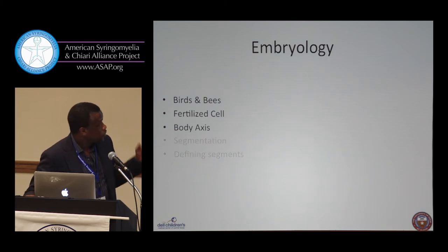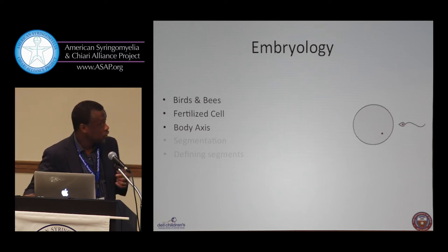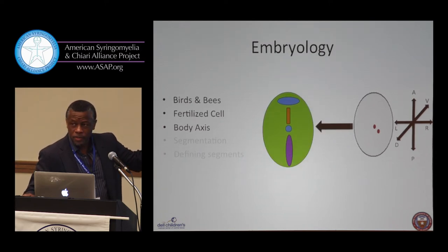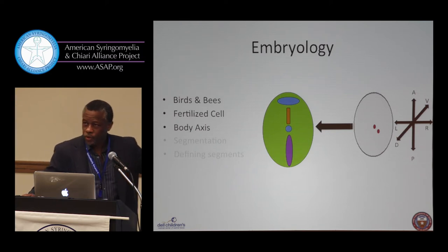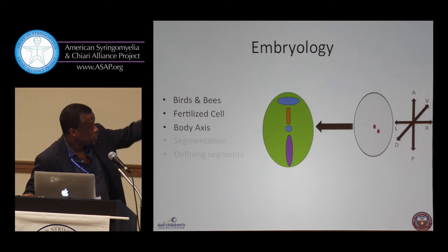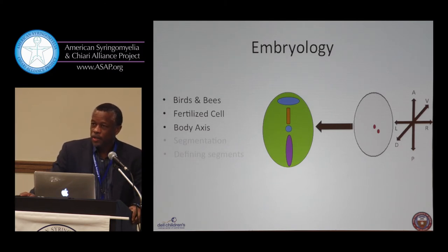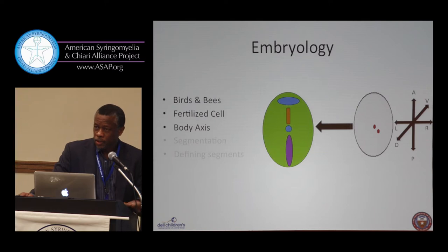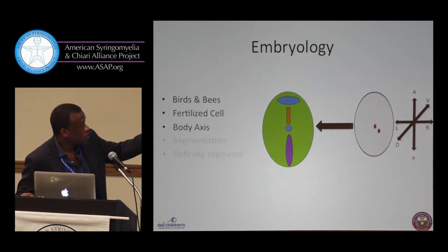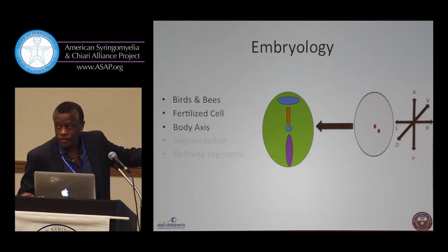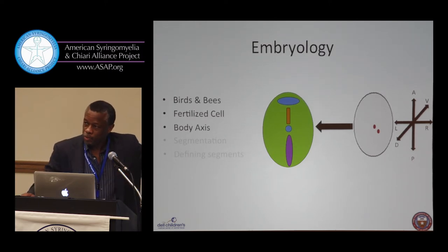Embryology really starts early on — the birds and the bees. First there's fertilization: the sperm enters the egg and contributes its genetic material. You get a single cell, but even at that level it goes on to develop a more complicated structure. Even at the very first cell, it is already starting to define what should be the head, what should be the tail, what should be left and right, what should be the front and the back. It's already pre-planned to go to the next step.